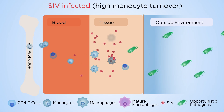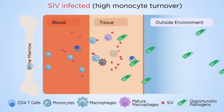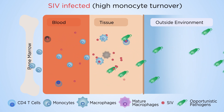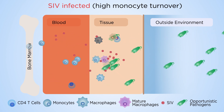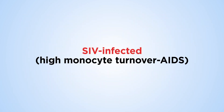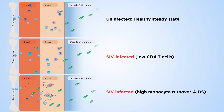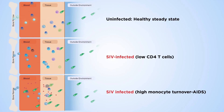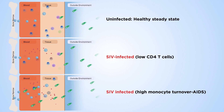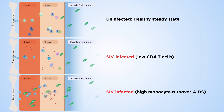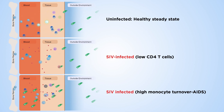As HIV infects more macrophages that die, the bone marrow is unable to sufficiently produce mature macrophages to fight pathogens. As more macrophages become infected before they have matured, opportunistic infections and tissue destruction occur that ultimately defines AIDS.